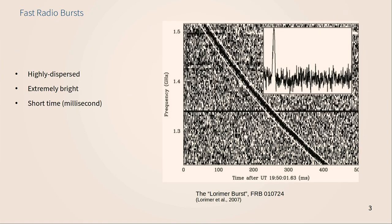Fast radio bursts — it's all in the name. They are micro- to millisecond duration pulses of highly dispersed radio emission, where dispersion refers to the phenomenon where lower frequency components arrive later than higher frequency components. On this so-called dynamic spectrum or waterfall plot, frequency is on the y-axis and time is on the x-axis, and we see this distinctive sweep due to lower frequencies arriving later. This is due to the fact that the speed of light varies in a plasma according to frequency. Because the universe is full of ionized gas, dispersion depends on the distance to the source — it's proportional to the column density of free ions along the path. It's called the dispersion measure, expressed in units of parsecs per cubic centimeter.